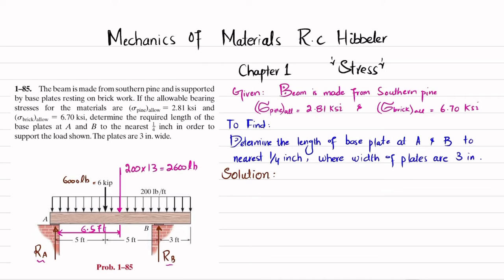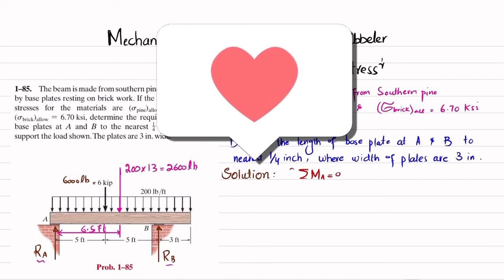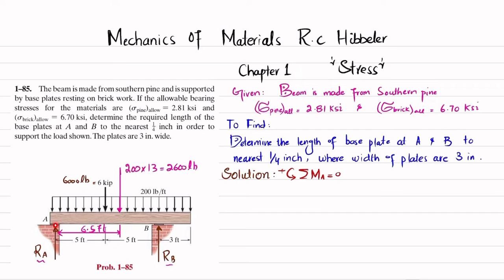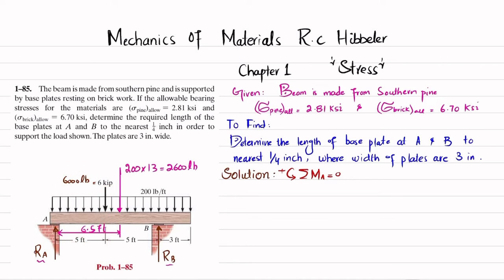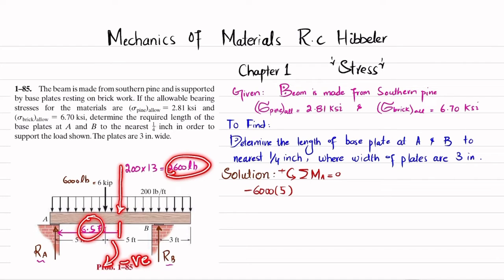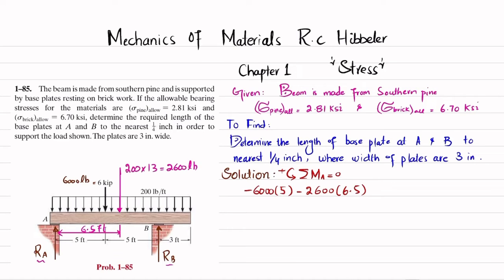Now apply the equations of equilibrium to find Ra and Rb. First equation: sum of all moments about point A equals zero, taking counterclockwise as positive. About point A, the 6,000-pound load at 5 feet produces a clockwise moment: −6,000 × 5. The 2,600-pound resultant at 6.5 feet also produces a clockwise moment: −2,600 × 6.5.